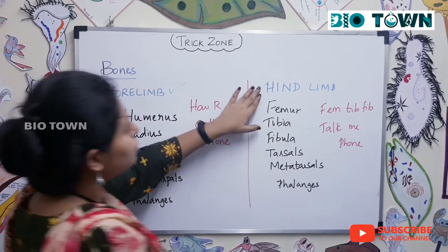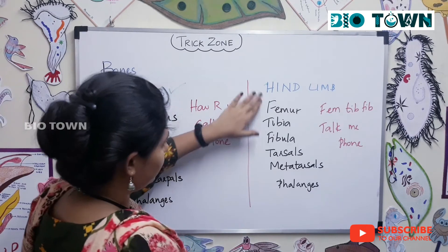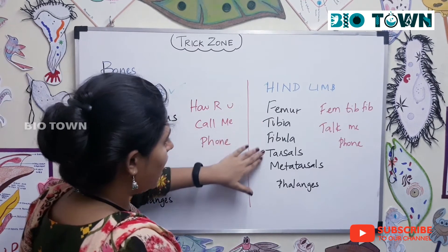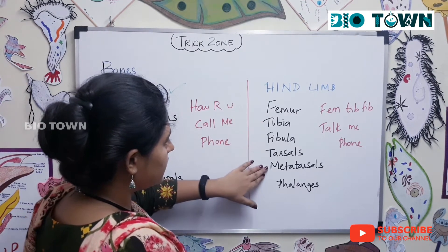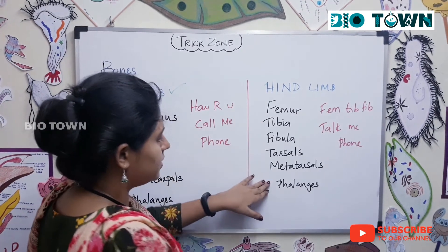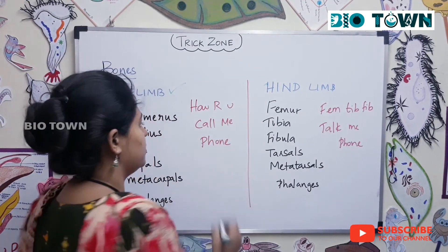Bones of hind limb: femur, tibia, fibula, tarsals, metatarsals, and phalanges.